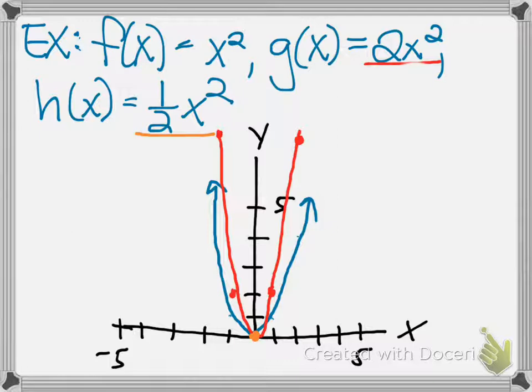Now if I plug 1 in for x, 1 squared is 1, 1 times 1/2 is 1/2. So my next point on the graph is going to be the point (1, 1/2), and that point will have its corresponding point on the left. If I plug in negative 1 for x, I'll get a positive 1/2 again.